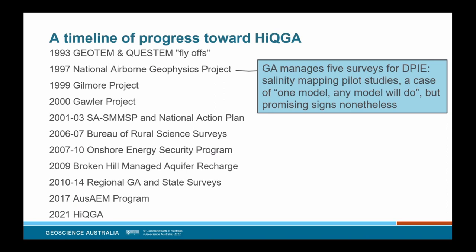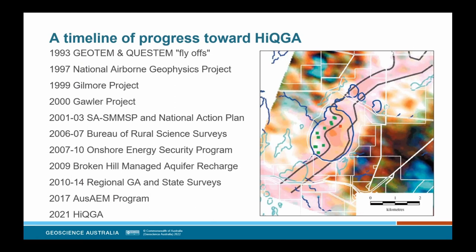For these surveys the more suitable Digim and salt map systems were now available. At this time the contractors were not supplying conductivity depth estimates or cross-sections. Nonetheless, the potential of AEM was realised through the qualitative interpretation of the spatial patterns in images of the AEM data themselves. A ternary image of three AEM data channels was responsible for identifying the existence of a paleo channel under Lake Tulabon, which was an important wetland in WA. It was later targeted for pumping to lower the water table. This was an early success.